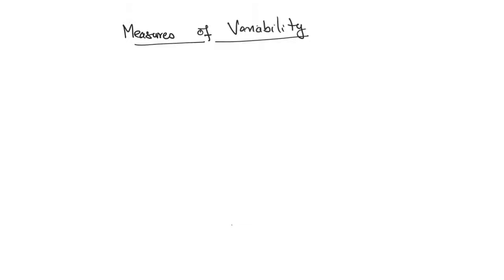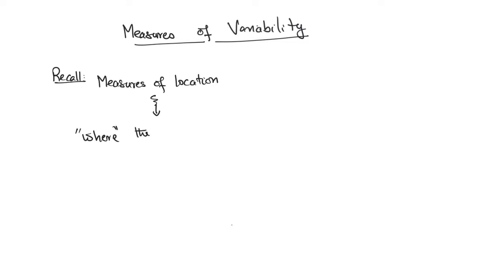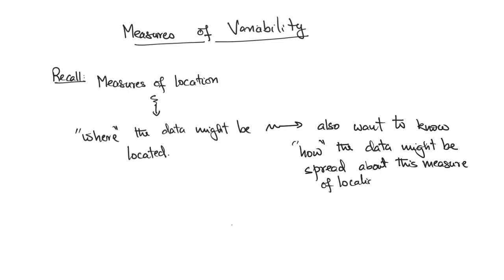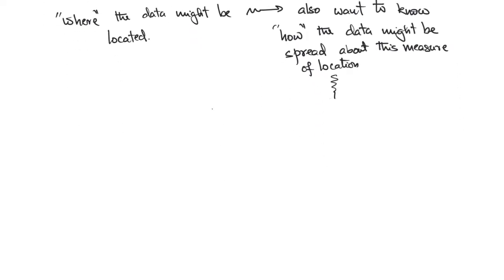In today's video we will talk about measures of variability. Recall that we spoke about measures of location in the previous video, which answered the question about where the data might be located. We might also want to be interested in how the data is located about the specific measure of location that we choose. Statistics and numbers that help us understand how data is spread about a given measure of location would be called a measure of variability.